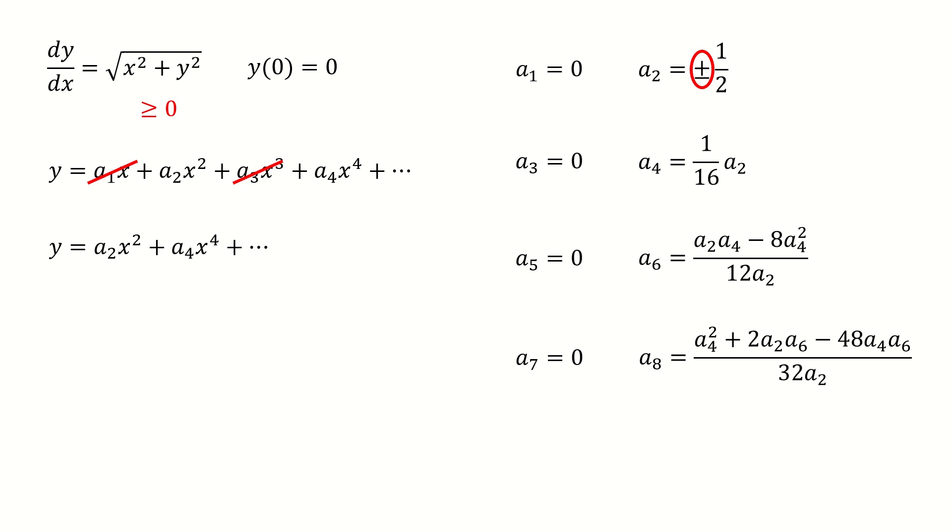And if the right hand side is non-negative, that means the left hand side is non-negative. So the derivative of y is non-negative. And if the derivative is non-negative, that means the function y is increasing. And also we have the initial condition, y(0) equal to 0. So that means this function starts from 0 and then is going up, as illustrated here.